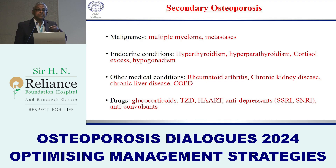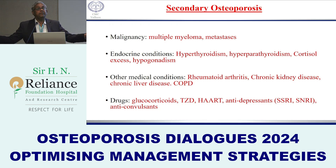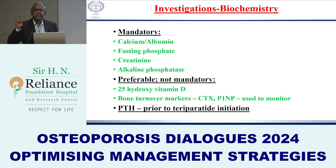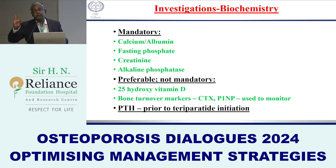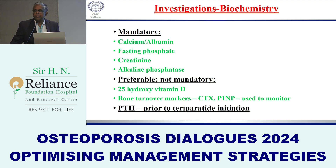Secondary osteoporosis should always be considered, especially when we see a young patient or someone aged with very severe osteoporosis. Mandatory minimum investigations include calcium and albumin — calcium must always be corrected for albumin. Fasting phosphate is very important and must be measured in a fasting state, otherwise you get a wrong reading. Renal parameters and alkaline phosphatase should also be assessed.